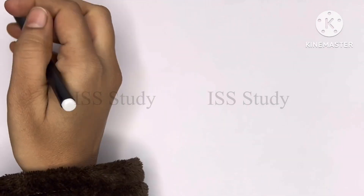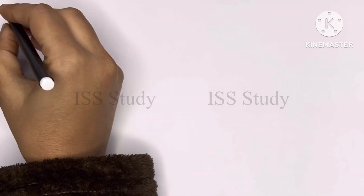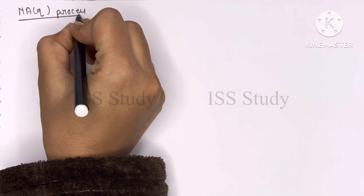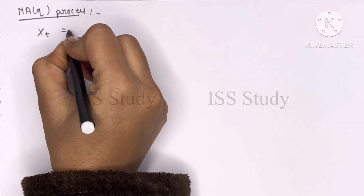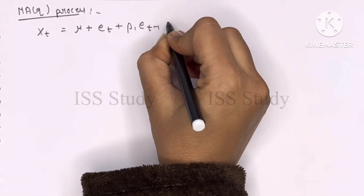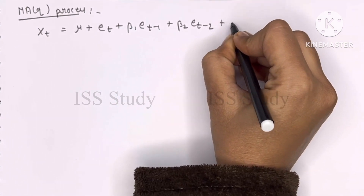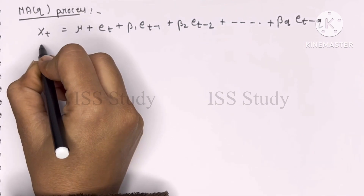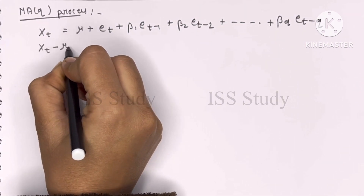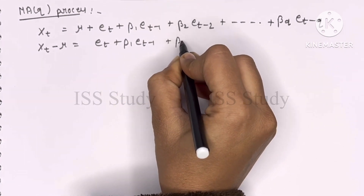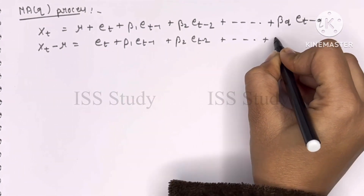First of all, the MA(q) process can be written as: X_t equals mu plus epsilon_t plus beta_1 * epsilon_{t-1} plus beta_2 * epsilon_{t-2} plus dot dot dot plus beta_q * epsilon_{t-q}. So here, X_t minus mu equals epsilon_t plus beta_1 * epsilon_{t-1} plus beta_2 * epsilon_{t-2} plus dot dot dot plus beta_q * epsilon_{t-q}.